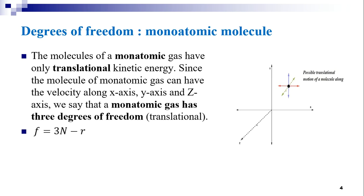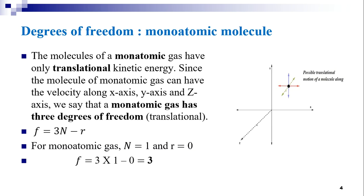Using F = 3N − R to find the degrees of freedom of a monoatomic gas: N = 1 (number of atoms) and R = 0, since it is a monoatomic particle. Hence, F = 3 × 1 − 0 = 3. Therefore, for a monoatomic gas molecule, the degrees of freedom is 3.